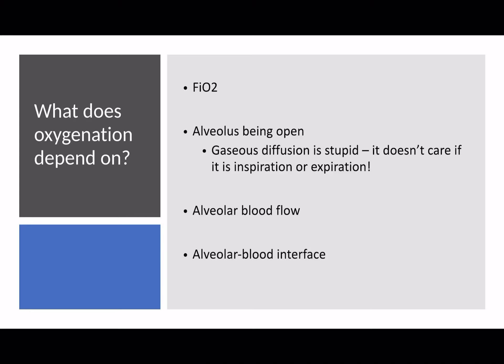The second thing is the alveolus being open. As long as that alveolus is open, whether in inspiration or expiration, you're going to get gas moving from the alveolus into the blood supply. One of the concepts of positive end expiratory pressure — PEEP or CPAP — is that you try to maintain alveolar recruitment throughout the respiratory cycle. Gas diffusion isn't clever; it doesn't depend on whether the patient is inspiring or expiring. All that matters is that the alveolus is open — the longer it's open, the more time you're allowing for oxygen to diffuse into the blood supply.